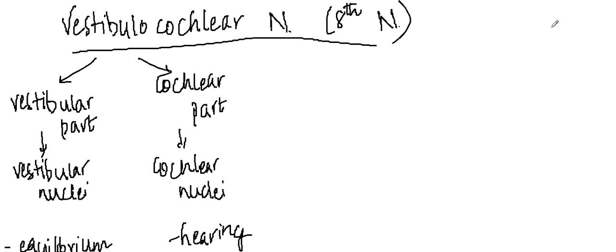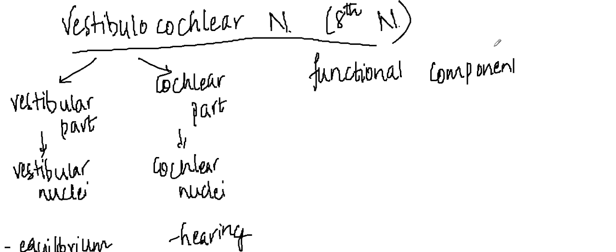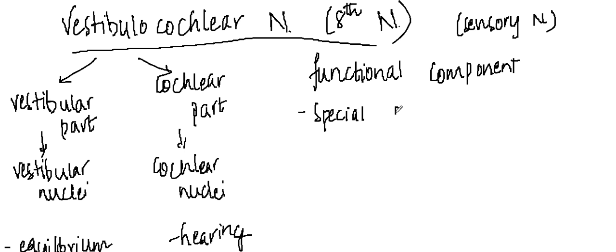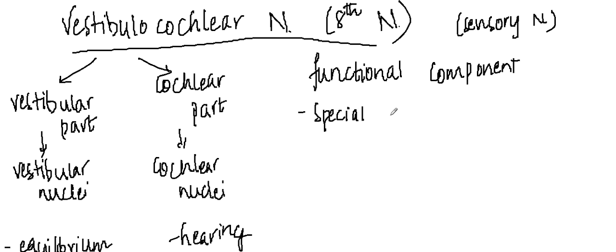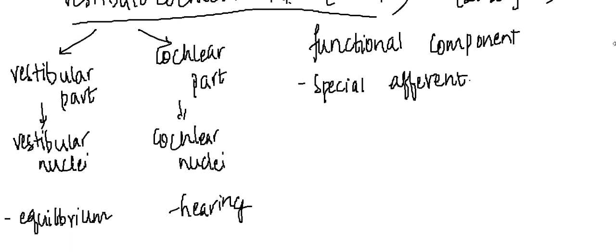Before going into the proper course of the vestibulocochlear nerve, I would like to discuss the functional component. This vestibulocochlear nerve is a pure sensory nerve. It has components which are special somatic afferents — these are special senses, special afferents — because they carry sensations for maintaining equilibrium and also hearing.